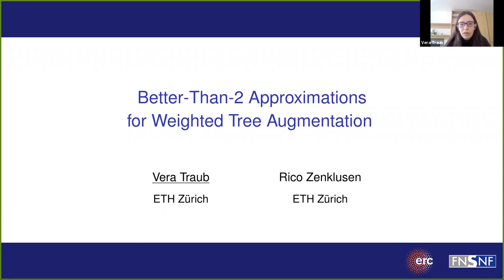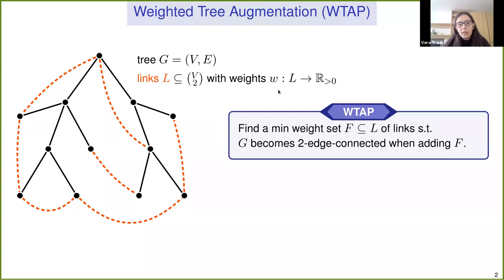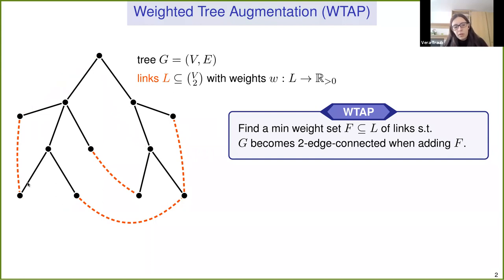Let's get started with the problem definition. In weighted tree augmentation, we are given some tree G with vertices and edges shown in black, and we are also given some extra edges called links — these are the orange dashed edges. These links come with a non-negative weight function W. Our goal is to find the minimum weight subset of links such that when we add them to tree G, we obtain a two edge connected graph.